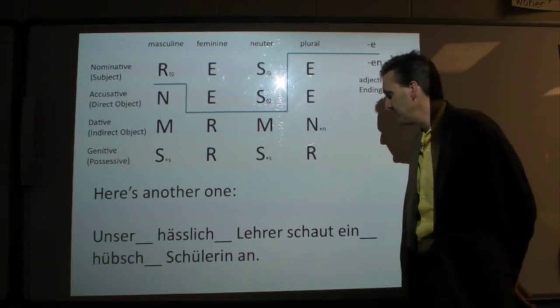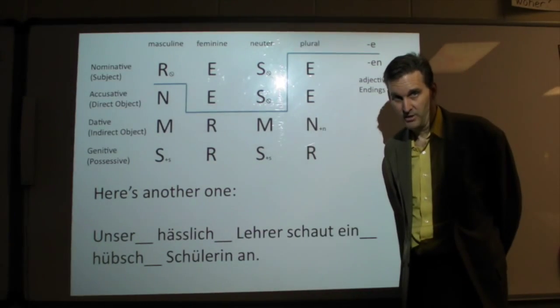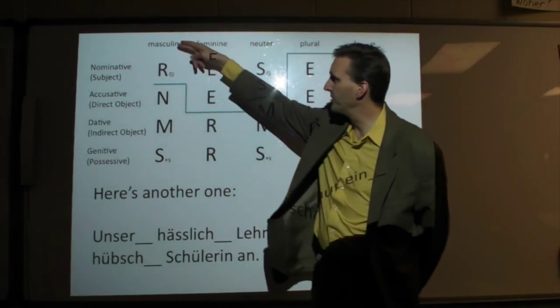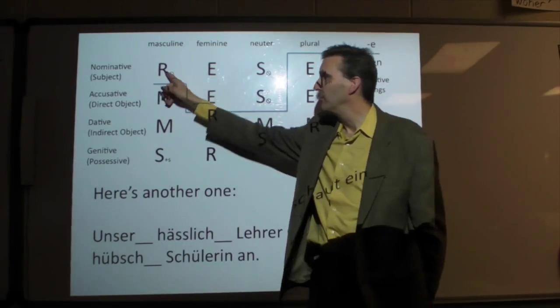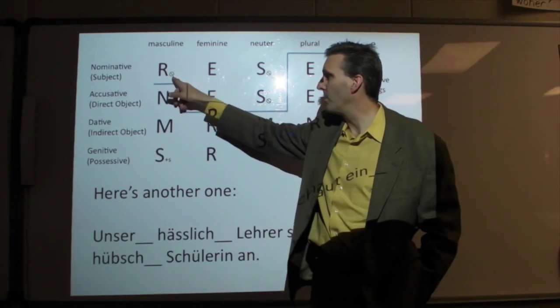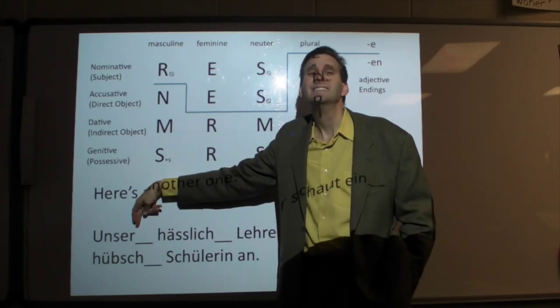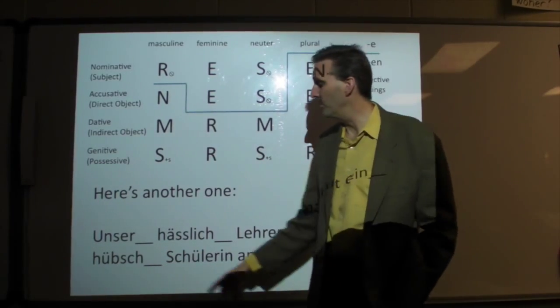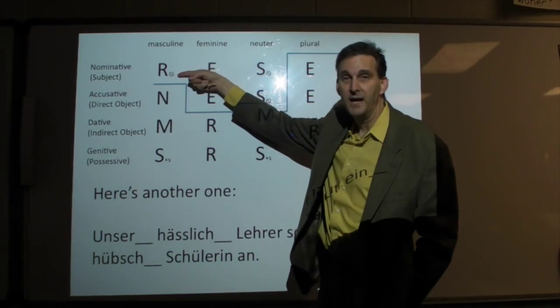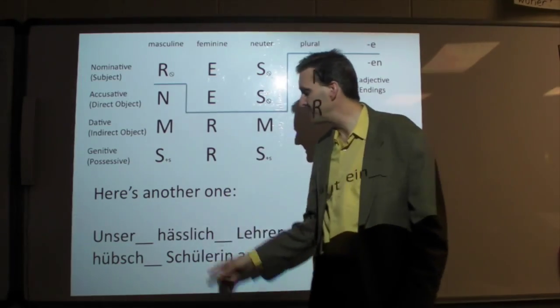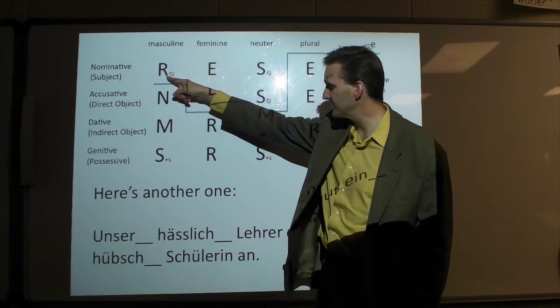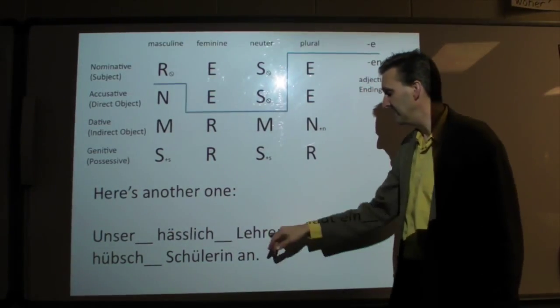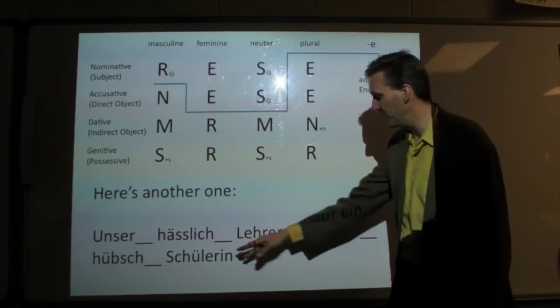Let's try another one here. Our ugly teacher looks at a beautiful student. Well, yeah, that isn't awkward. All right. Here we go. Our ugly teacher, if that's a male teacher, we're over here as a subject. Does unser orphan its endings? Yes, it does. So, we have orphaned this -er. You say, isn't there an -er there already? Yeah, but that's the base of the word. It's actually possible to say uns-er-er. But, in this case, we are going to orphan that -er and just have unser. But, this nice adjective here wants to adopt this -er. So, that's where we put it back, hässlich-er. So, unser hässlicher Lehrer.